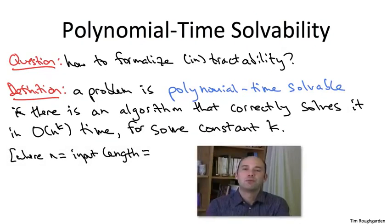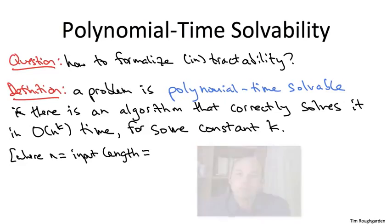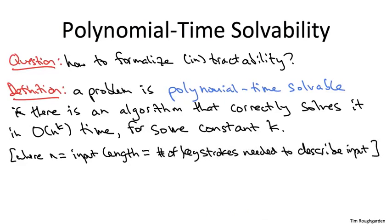Pretty much all of the problems we've discussed, it's been kind of obvious what the input length was. It was, for example, the number of vertices plus the number of edges, or it was the number of numbers that had to be sorted, et cetera. For an abstract problem, you know, just informally, I would encourage you to think about the input length n as the number of keystrokes on a computer that would be required to describe that given instance.